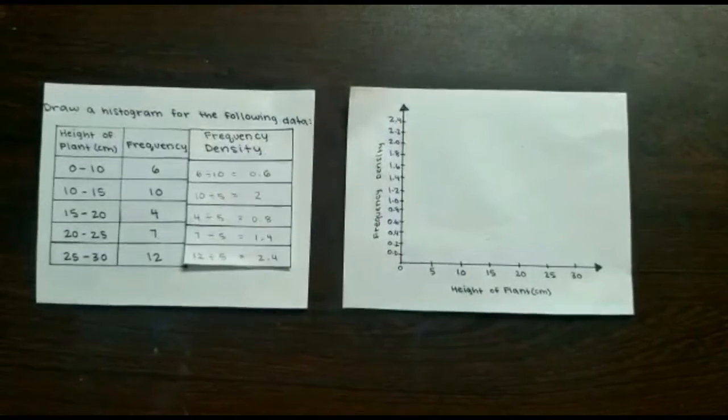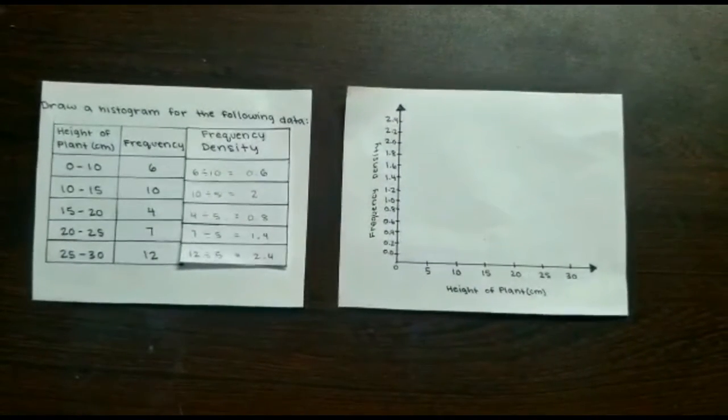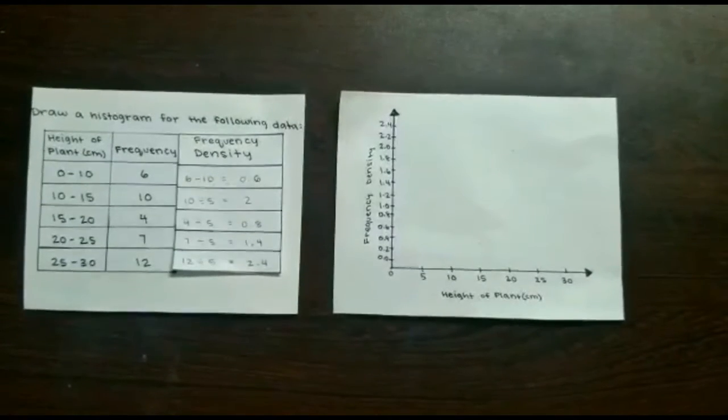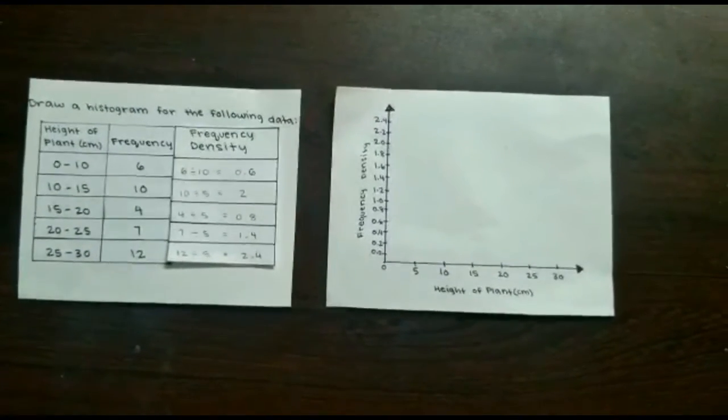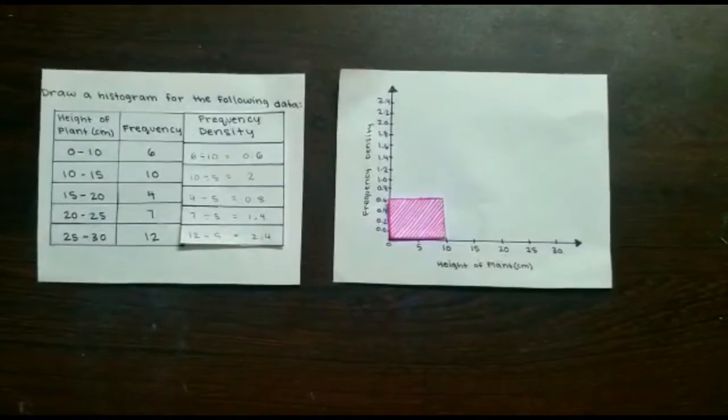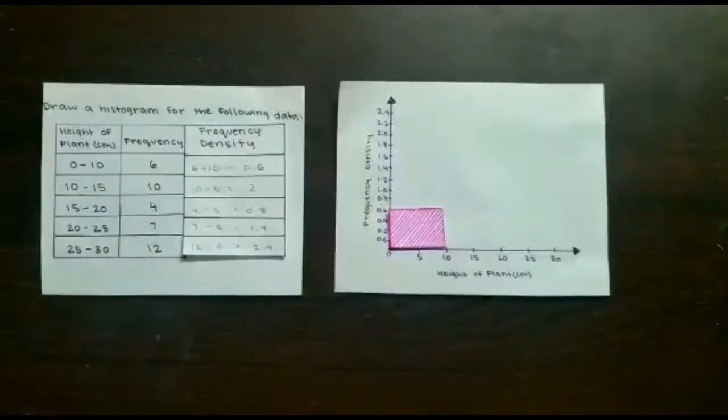Now we can actually start drawing the histogram. First, we need to find a suitable scale and label each axis. When drawing the bars, we can think of each bar as a rectangle. The group width is represented on the x-axis as the length, and the frequency density is represented on the y-axis as the width.